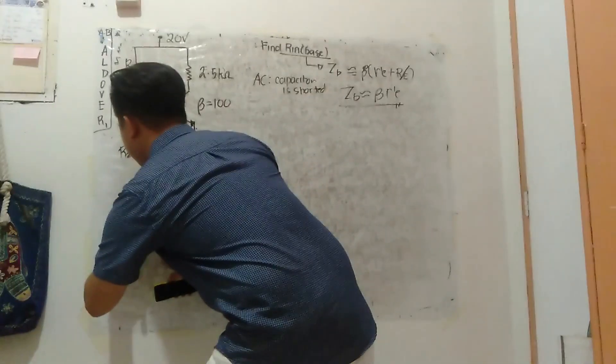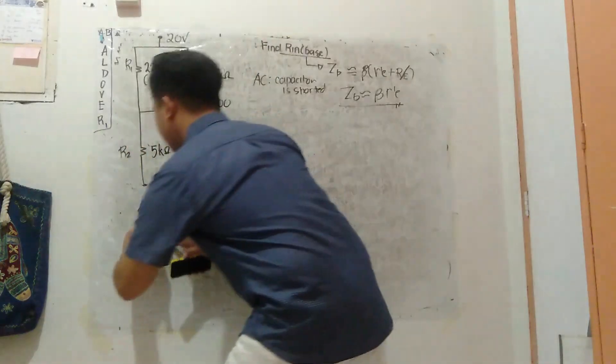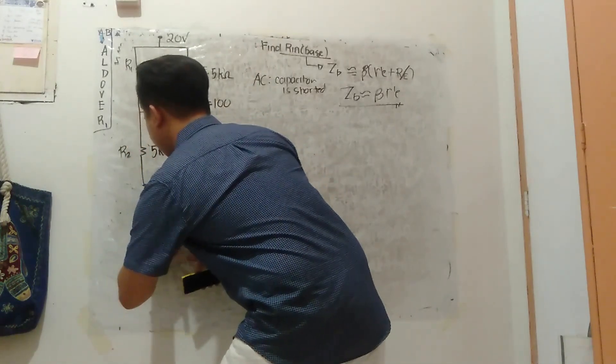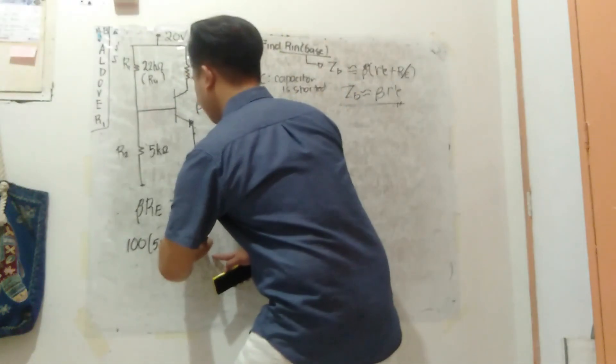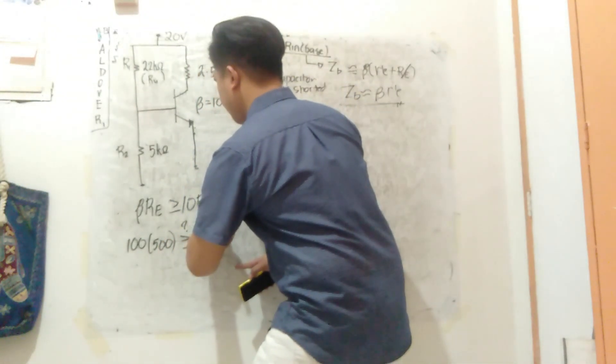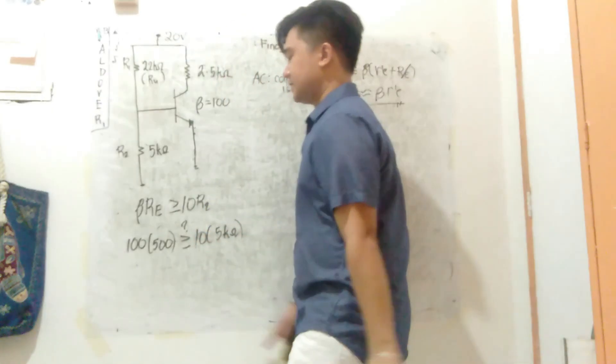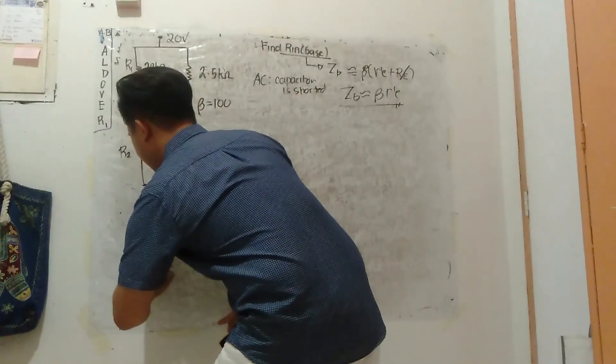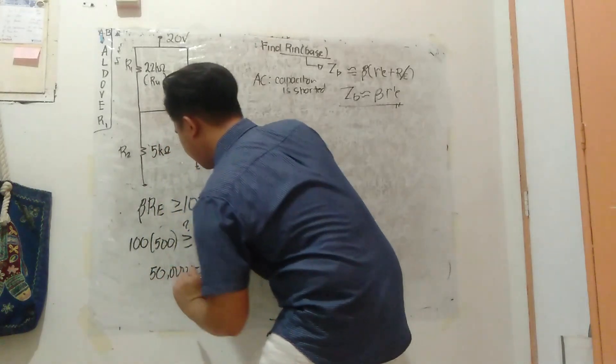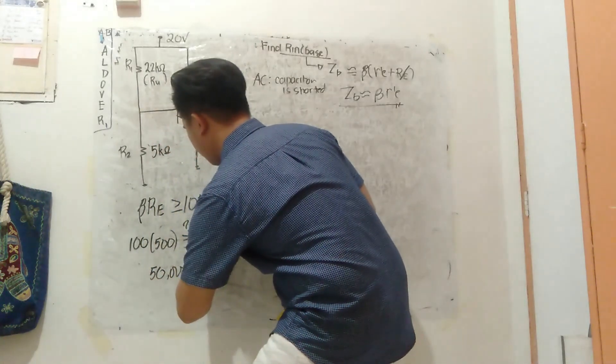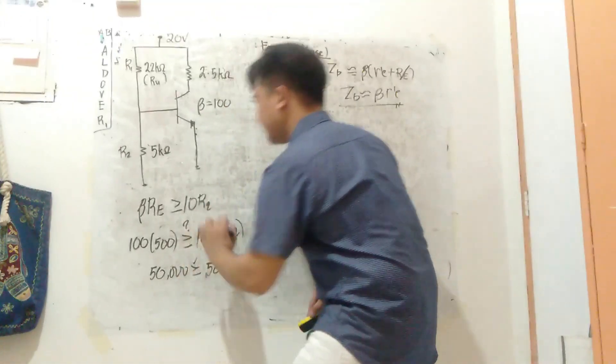So beta is 100, R'e is 500 that we removed. Is it greater than or equal to 10 times R2 which is 5 kilo ohms? So this is 50,000 and it is equal to 50,000. So I can use approximate analysis.